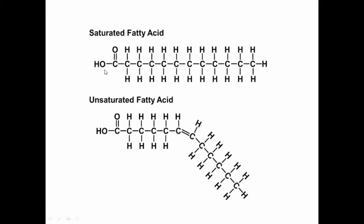This is the structure of saturated fatty acids. As you can see, at one side the carboxyl group is present. There is a long chain of hydrocarbons, and at the other end is CH3. This is the carboxyl group and the long chain of hydrocarbons. In saturated fatty acids, all carbons have single bonds — there is no double bond.